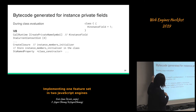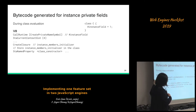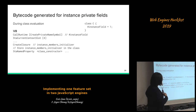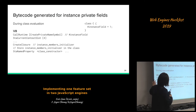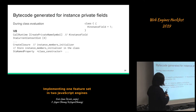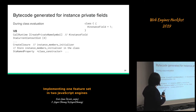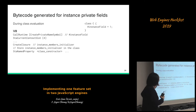In V8 we store private symbols in a slot of the current context associated with the current class. We statically know which slot index the field resides in, so the context is kind of a fixed array — everything is nicely static and contiguous. We also need to create a closure, which in V8 bytecode is basically a function, to initialize the field that we will invoke later during instance construction. We then store this initializer onto the class using a special symbol.